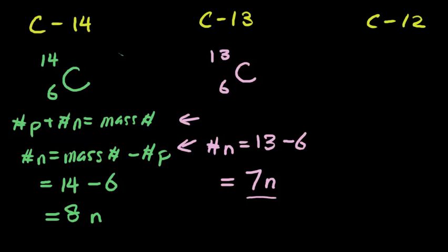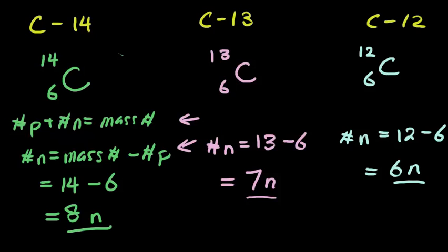And then moving on to carbon-12, which is the most common form of carbon that you will find in nature. Carbon-12, we use the same formula as before. So our number of neutrons is equal to 12 minus 6, which would give us 6 neutrons. So again, these three forms of carbon are isotopes of one another. You'll notice that each one of these has a different number of neutrons. However, they have the same number of protons. It's our definition of an isotope.